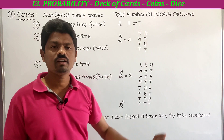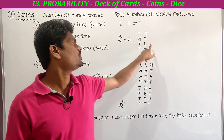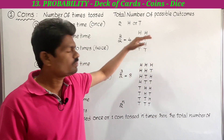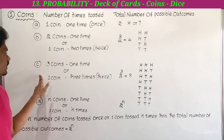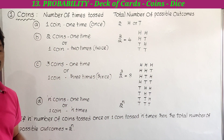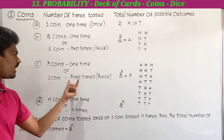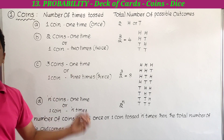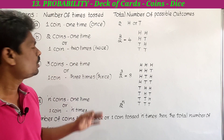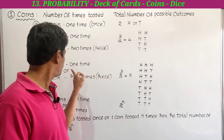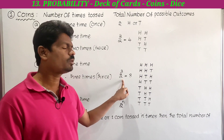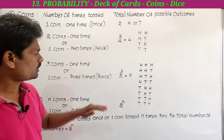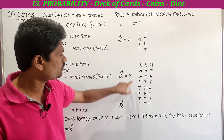The possible outcomes for two coins are: 1st head 2nd head, 1st head 2nd tail, 1st tail 2nd head, 1st tail 2nd tail. For three coins tossed one time, or one coin tossed three times, n equals 3, so 2 to the power 3 is 2 into 2 into 2 equals 8. The total possible outcomes are 8.